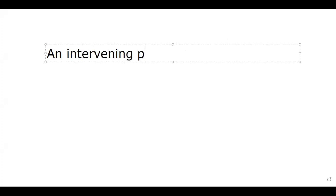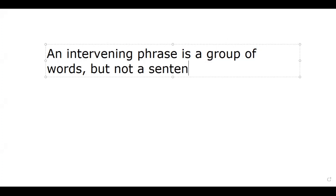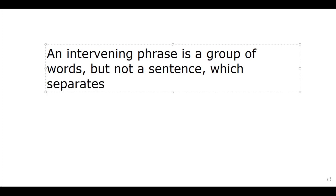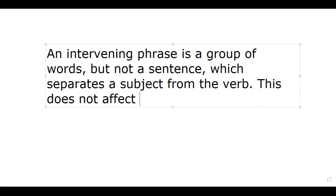We start with the definition of an intervening phrase. An intervening phrase is a group of words; however, it is not a sentence. This intervening phrase separates a subject from the verb. Technically, the intervening phrase does not affect the number of the verb in a sentence.